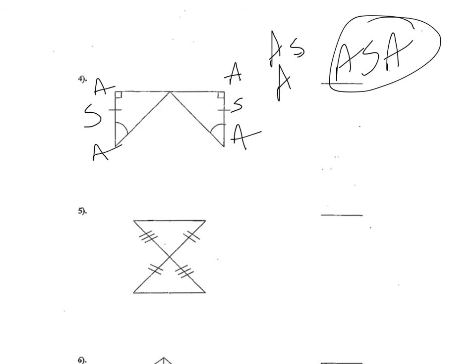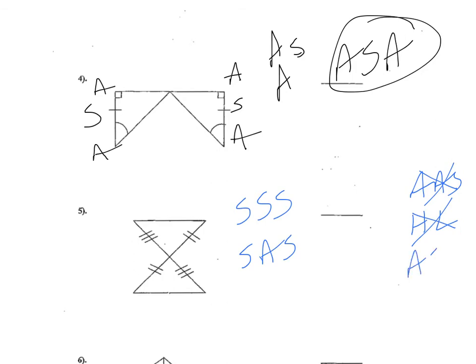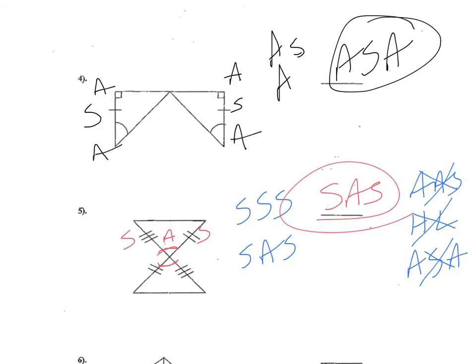In number five, it appears we're short some information — we do have two sides already. It's probably not AAS because I have two sides; not hypotenuse leg because there's no right triangle; and not ASA because I have two sides and no angles yet. When I'm short, I look for reflexive — which I don't have — or vertical angles. I do have vertical angles right here; those two angles across from each other must be equal. So I have a side, an angle, and a side — I'm going to use side, angle, side.